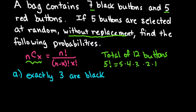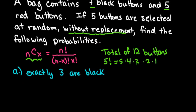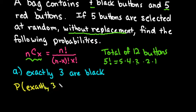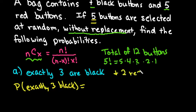So let's talk about this one. For the first problem we are looking for the probability of exactly three black buttons. That means that since we're selecting five total buttons, we want three of them to be black and two to be red.